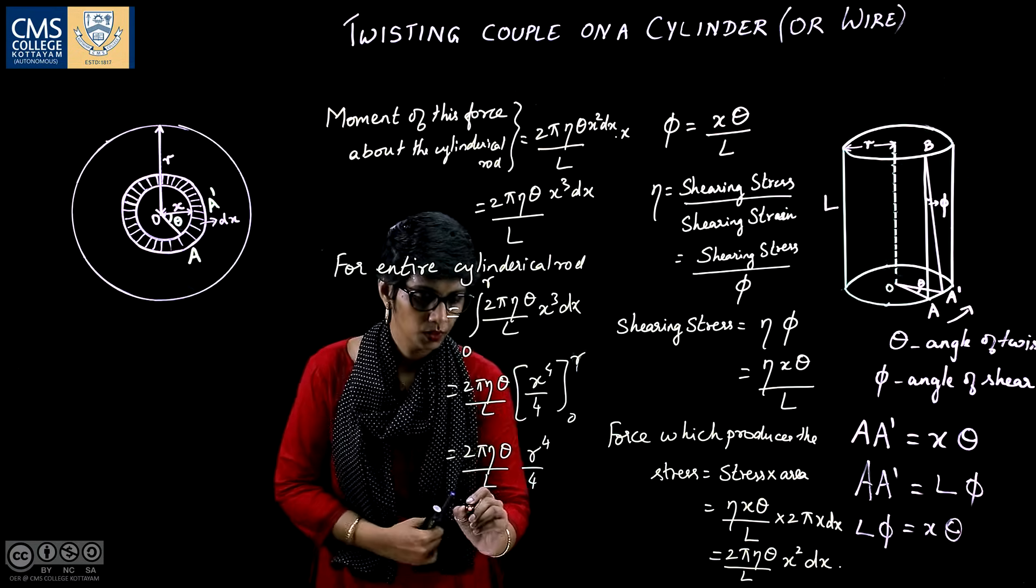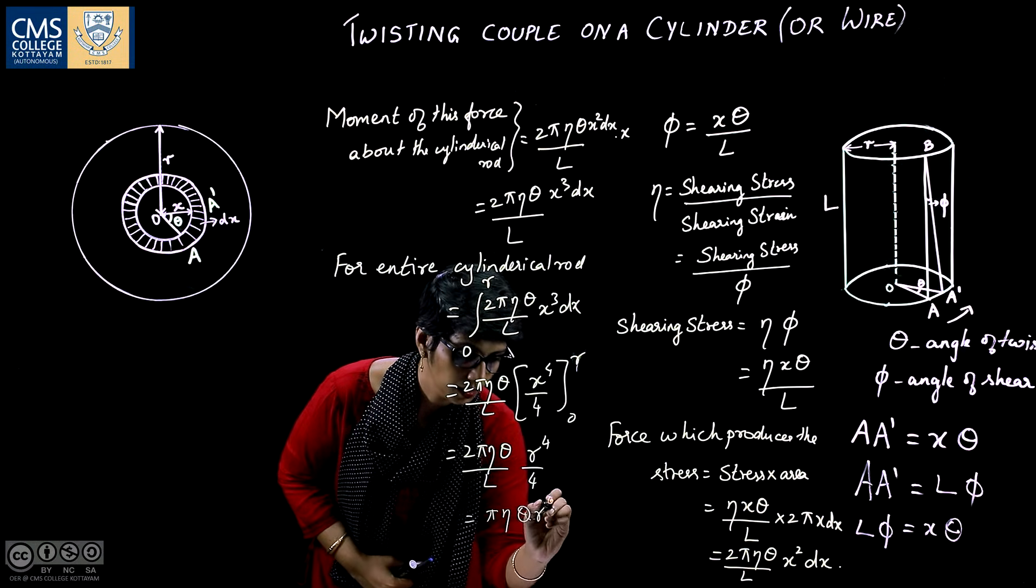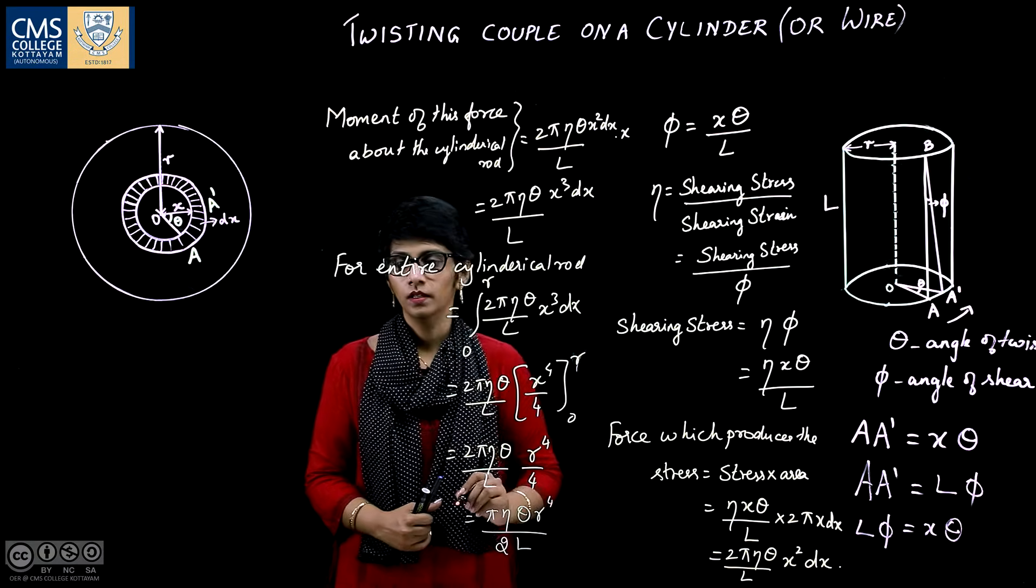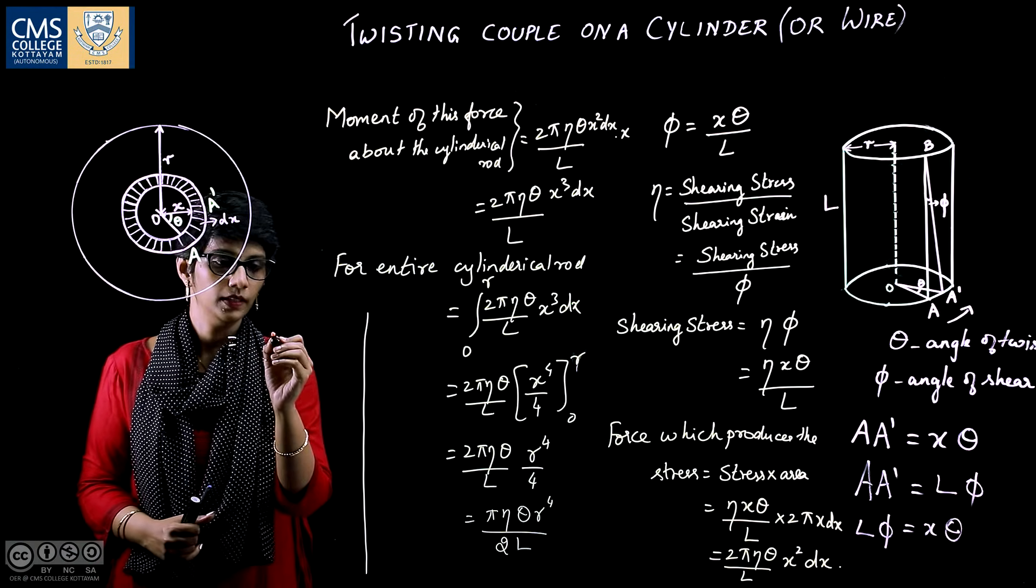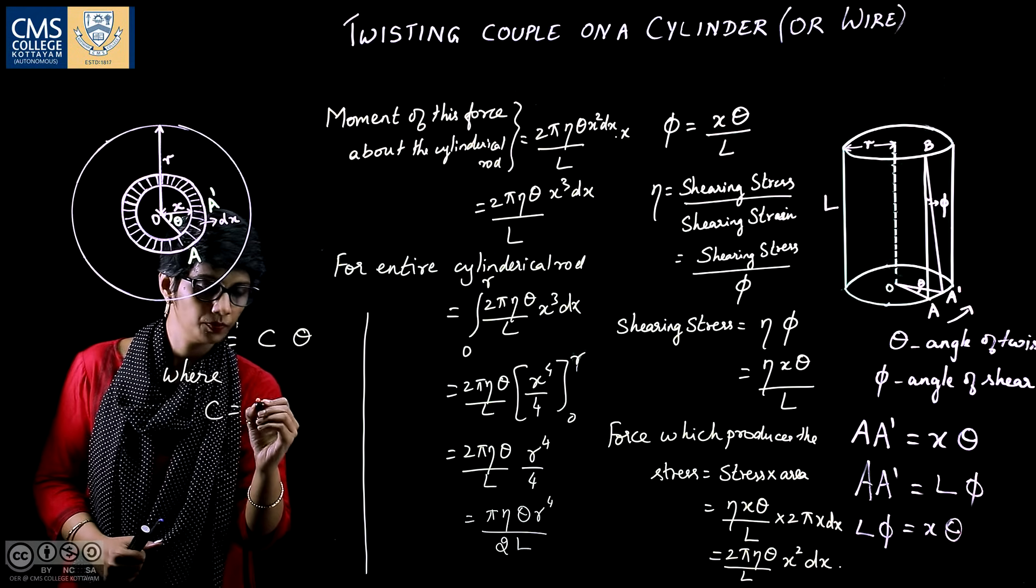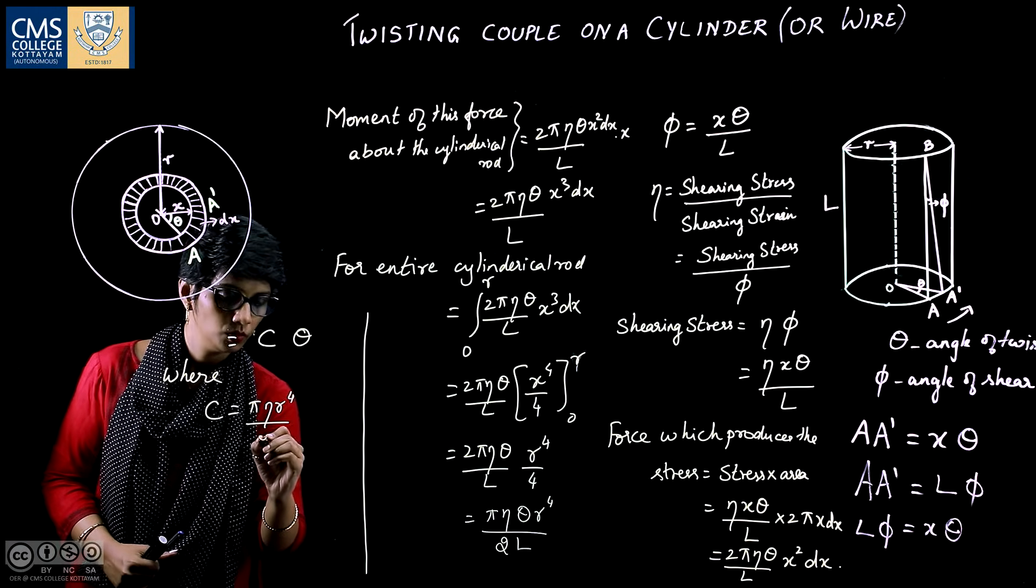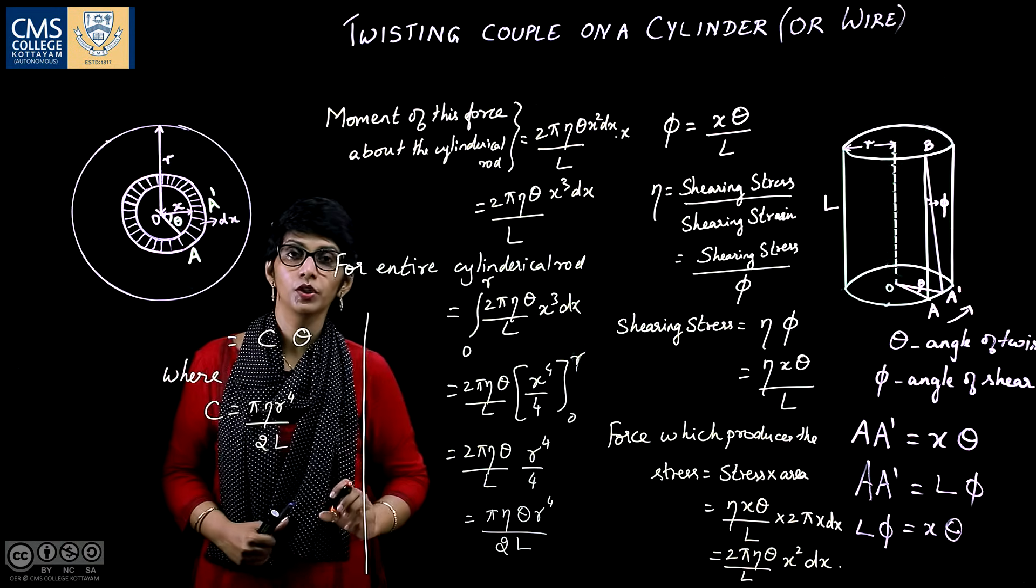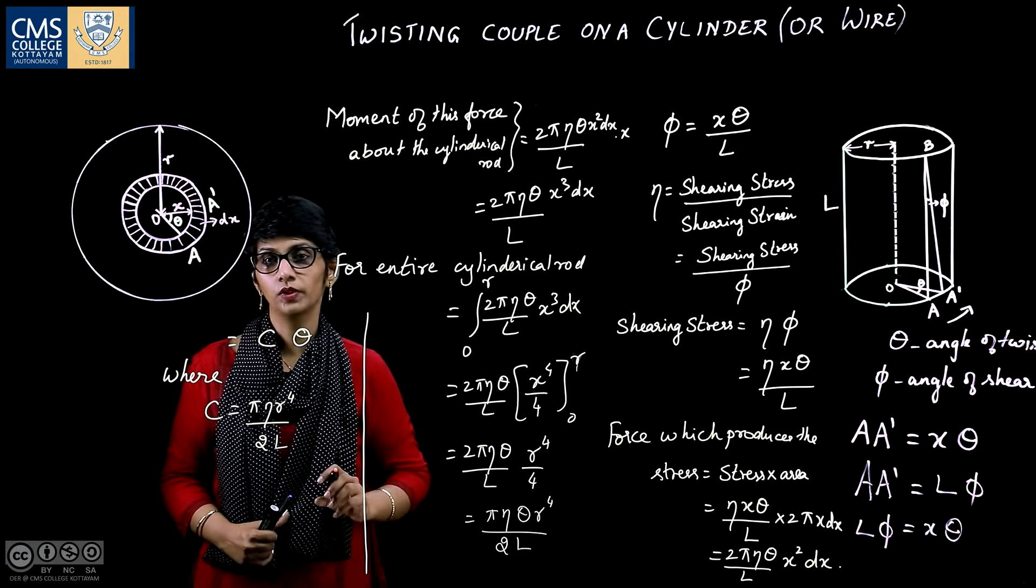Which is equal to pi eta theta r to the power 4 by 2L. This can be written as C times theta, where C is equal to pi eta r raised to 4 by 2L. This gives the couple per unit twist of the cylindrical rod, or it is called the torsional couple or torsional rigidity of the material.